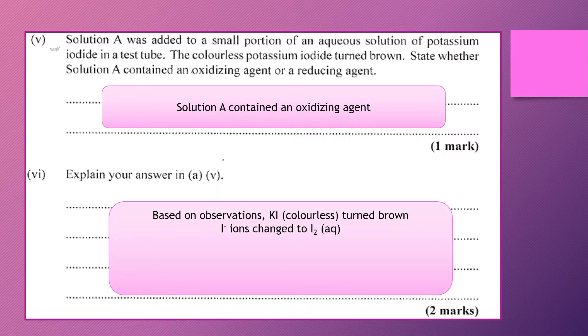And we are basing our answer, our explanation, on the fact that the KI, which is potassium iodide, changed from colorless to brown. So the iodide ions are being changed to iodine, aqueous iodine, which is responsible for the brown color.